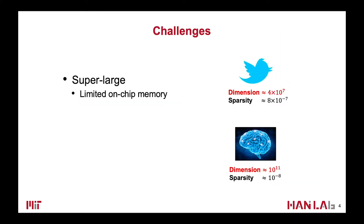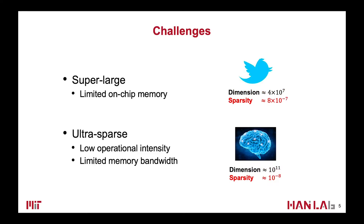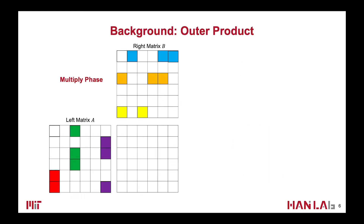However, these sparse matrices can be super-large and ultra-sparse. For example, the adjacency matrix of the Twitter graph has over 40 million rows, but the sparsity can be as low as 1 over a million. The large size makes them difficult to store on on-chip memory, and the ultra-sparsity makes performance easily limited by memory bandwidth.